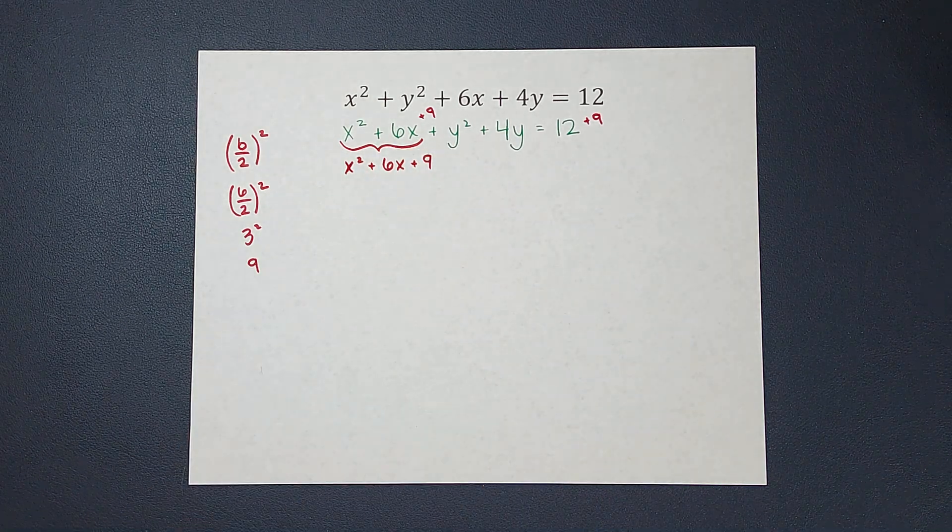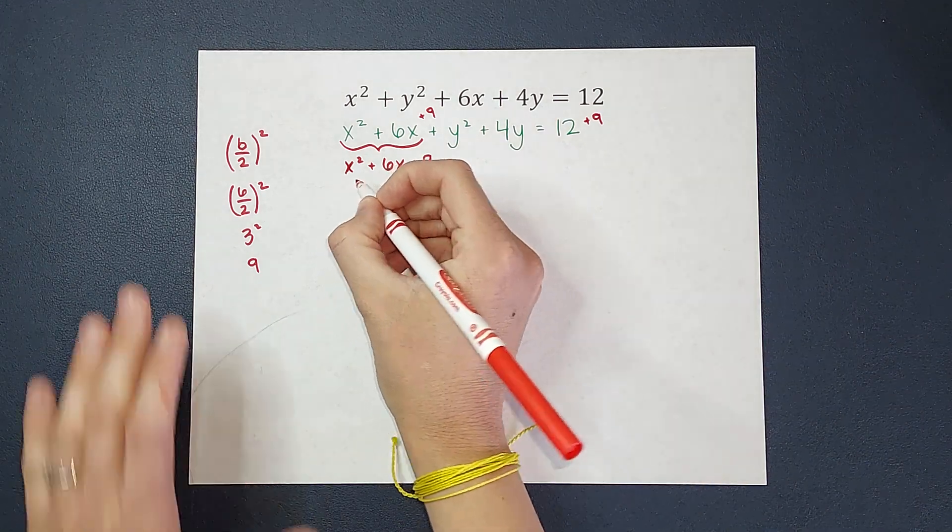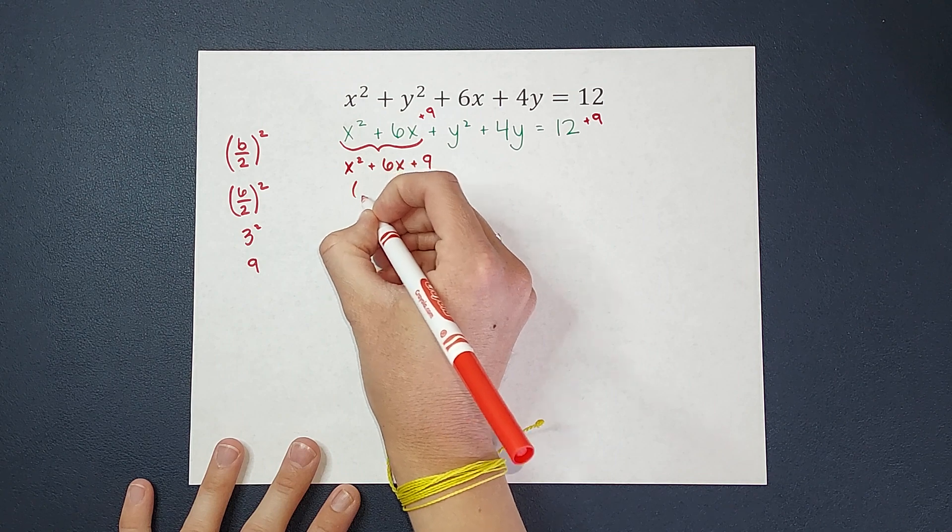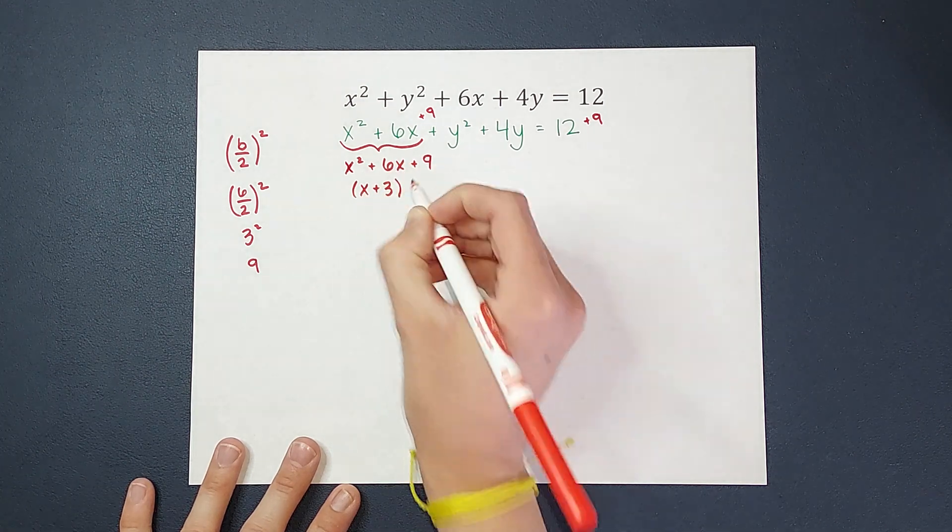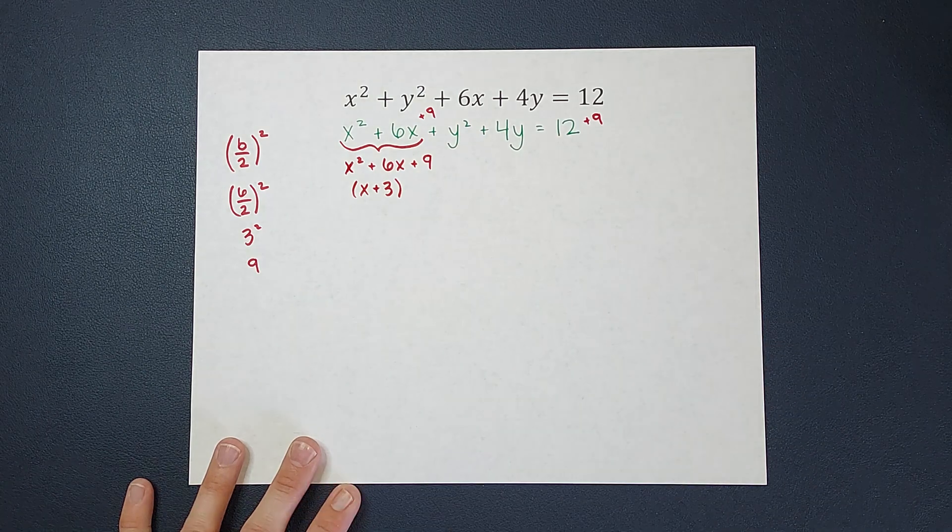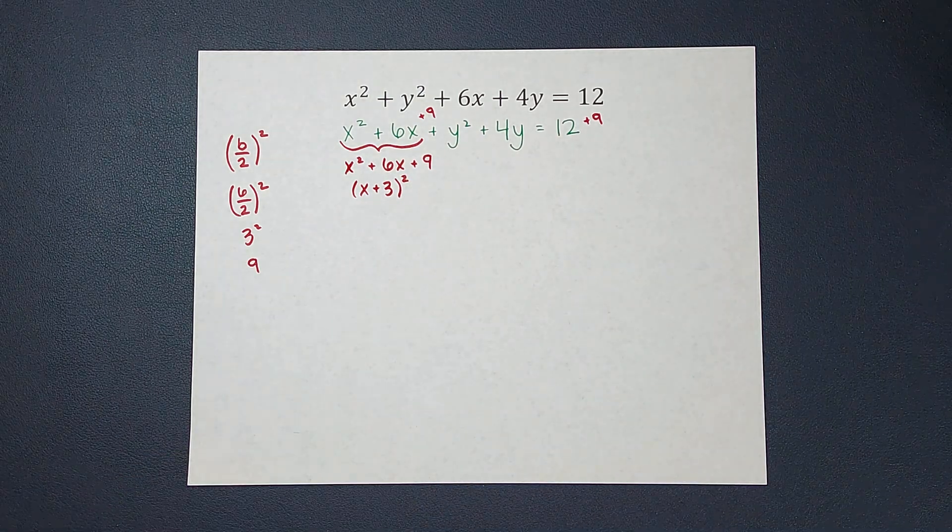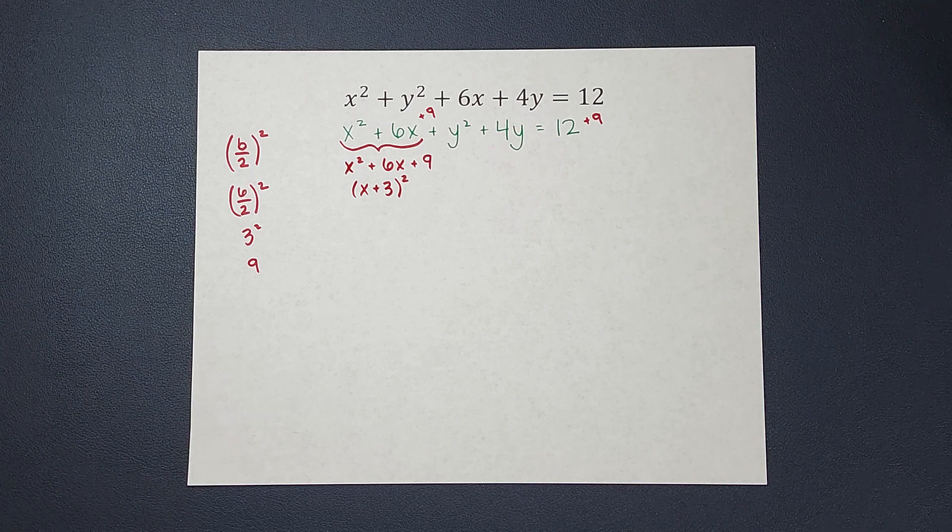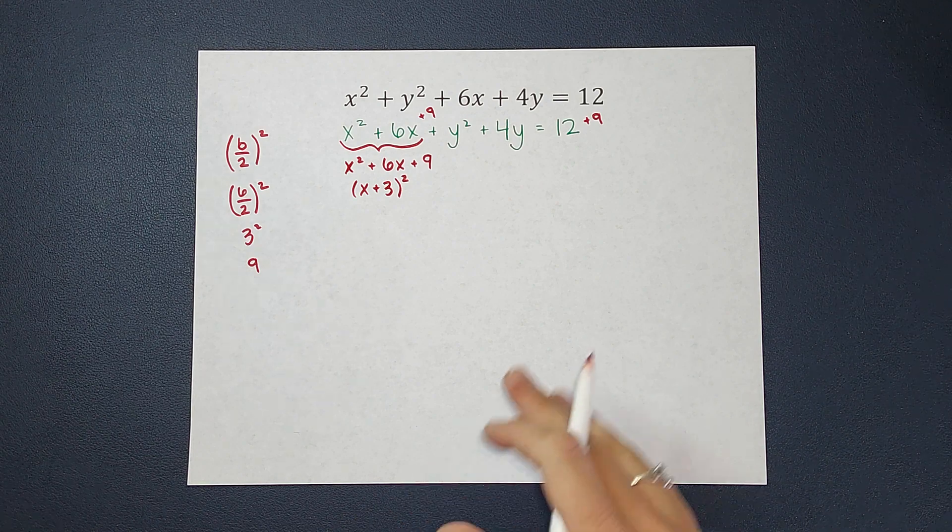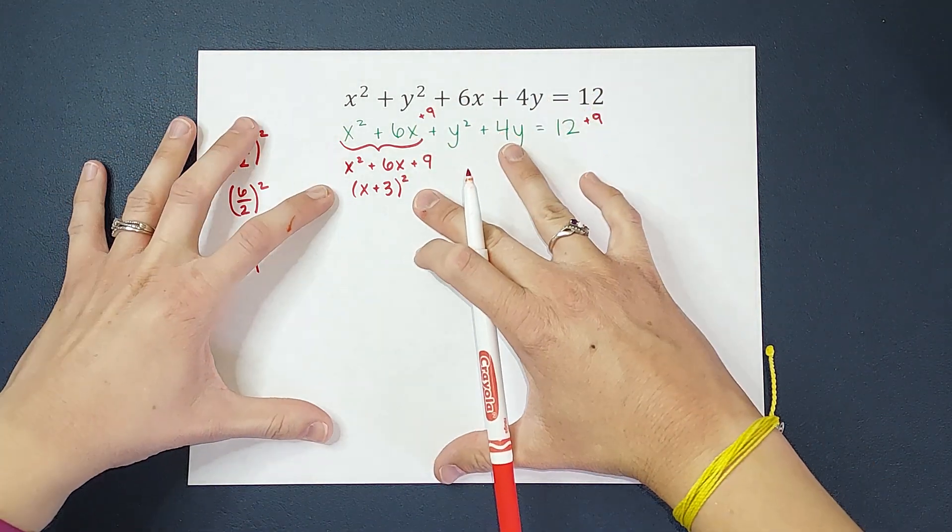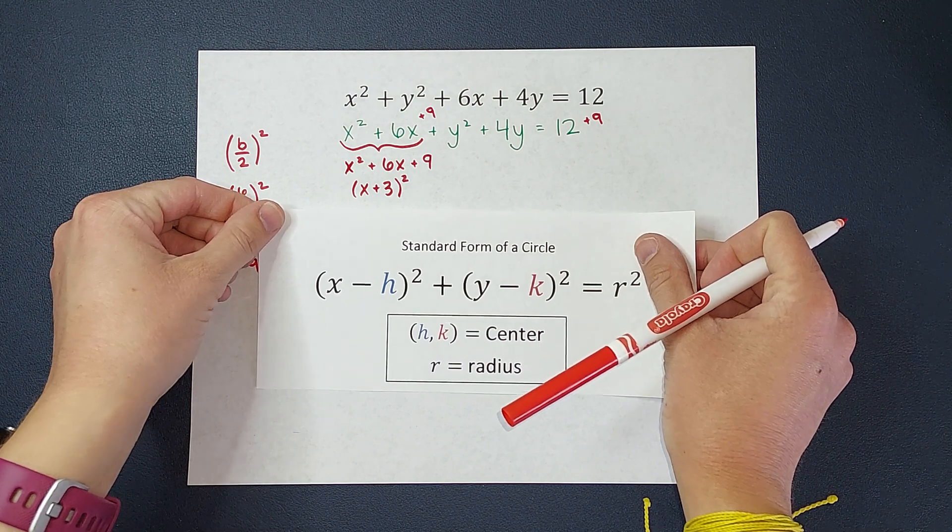So I've got x squared plus 6x plus 9, and I'm going to factor that. Now because I just did completing the square, I know this is going to factor to x plus 3 times x plus 3, or I can just write it as x plus 3 squared. If you didn't realize that would happen, you could factor just normally, and you'd get the same thing. So we have turned this to this, and we're getting a little closer to that standard form.